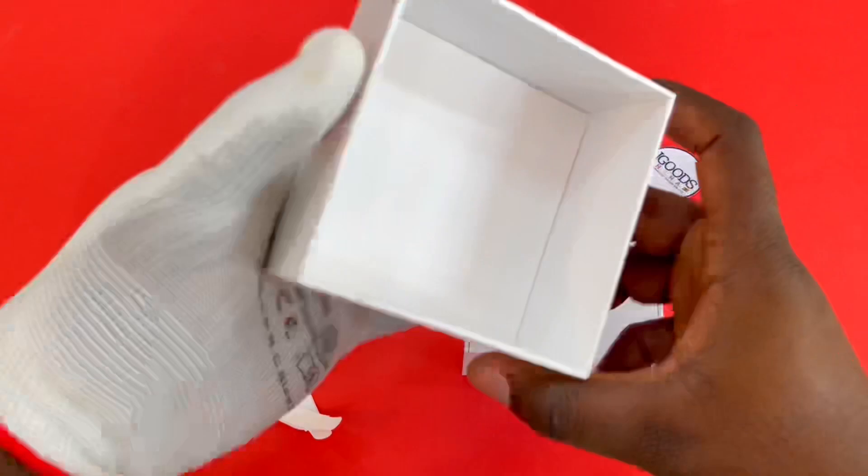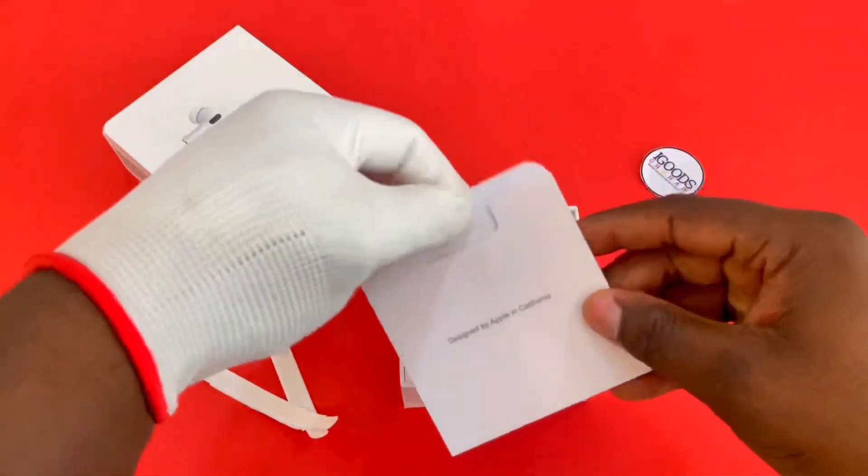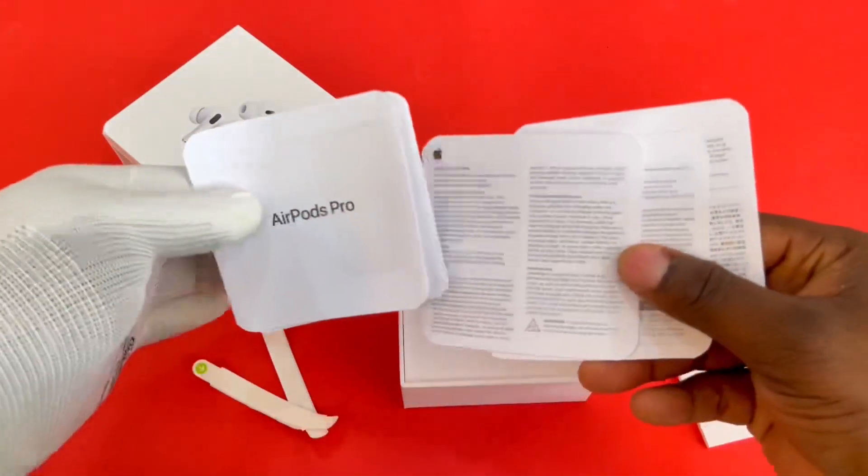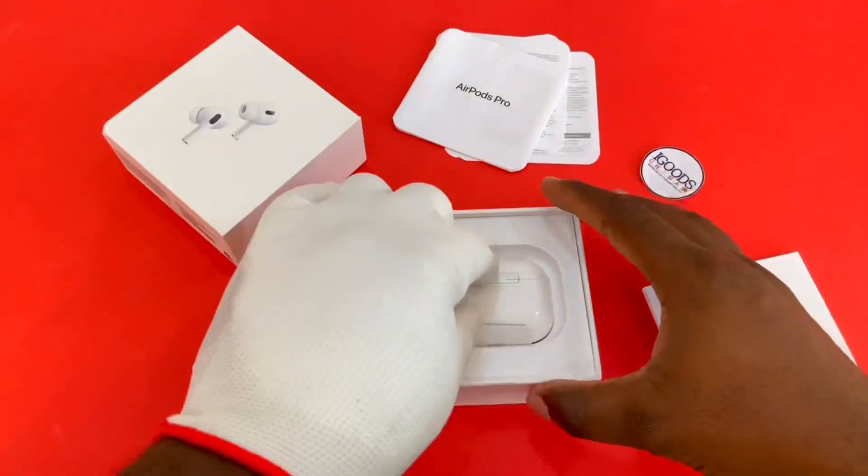So you can see the box has no glue. You can see it's perfectly finished. Now inside, the paperwork has to be curved as you can see with the warranty and everything you need.